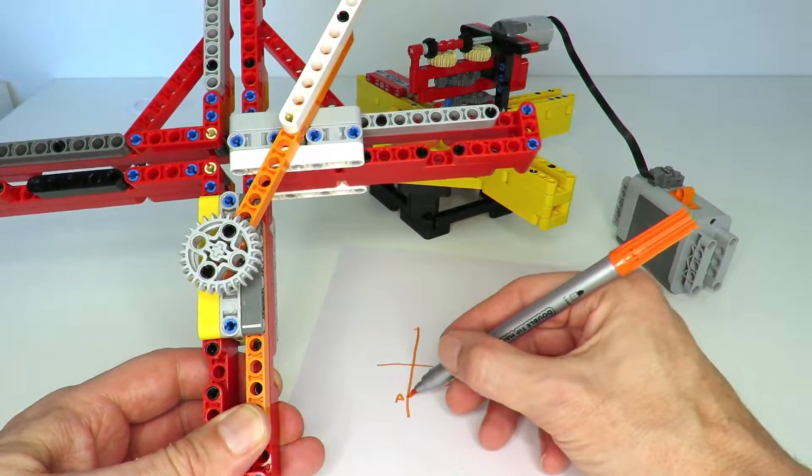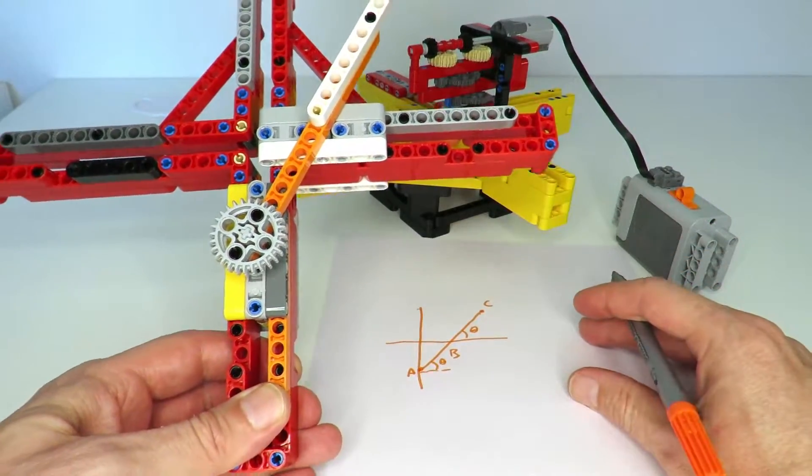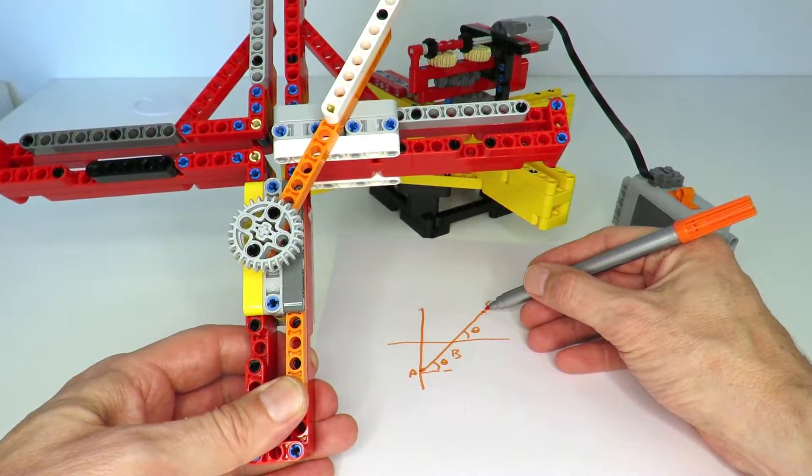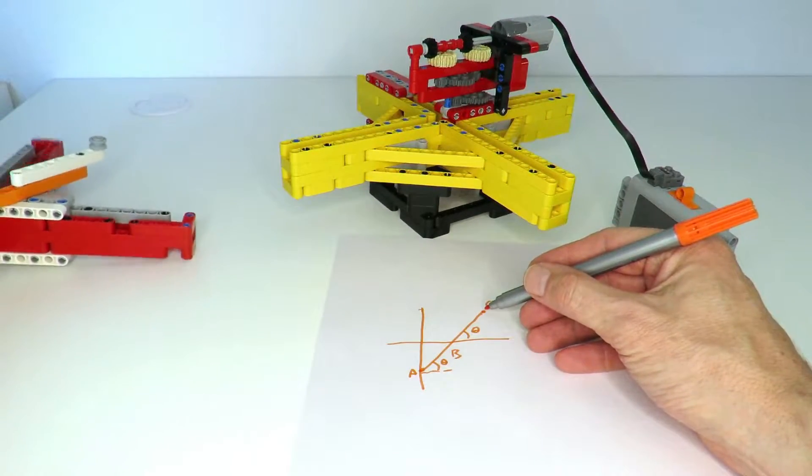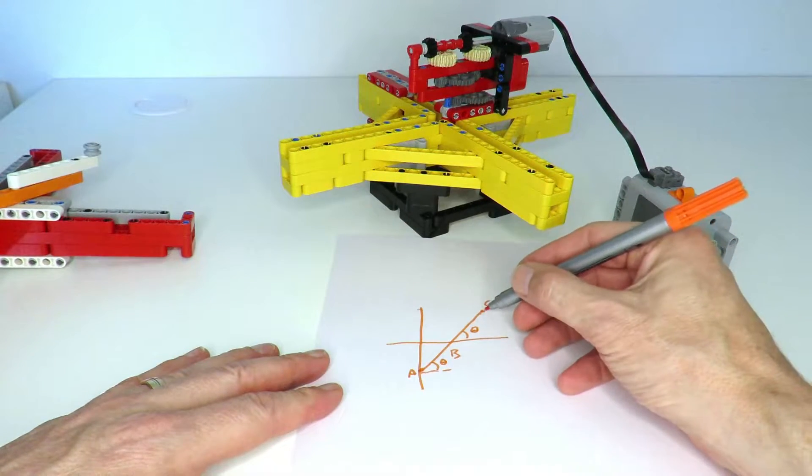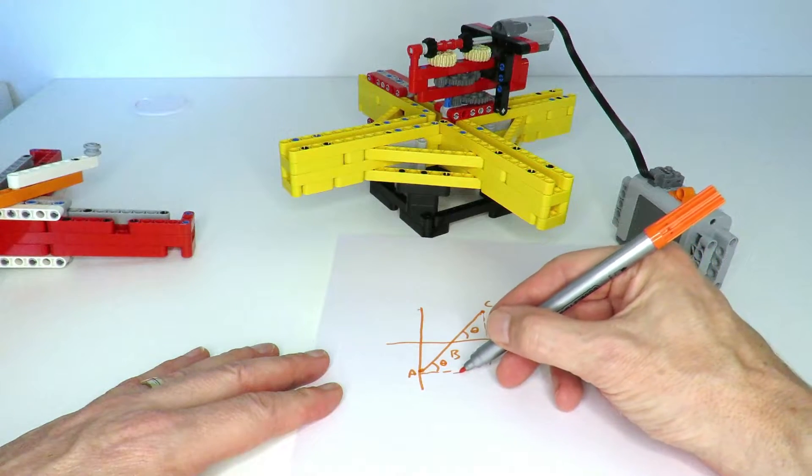So what we can do is work out the coordinate system of point C. If we try to work out the x-coordinate of C, what we can do is extend that and make a big triangle.